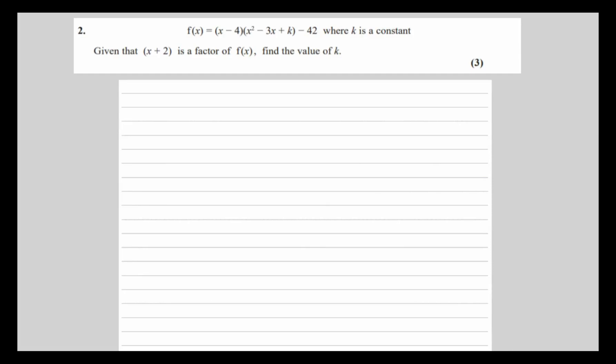f(x) = (x - 4)(x² - 3x + k) - 42, where k is a constant. We're told that (x + 2) is a factor of f(x), and we need to find the value of k.